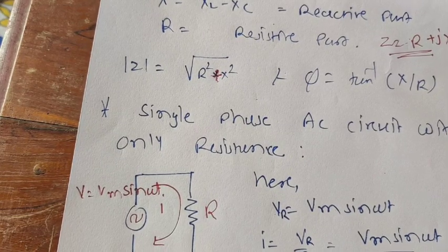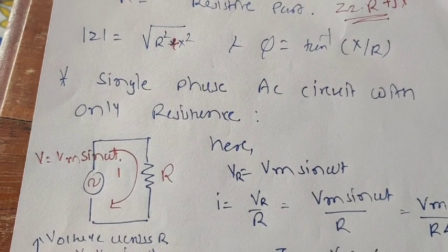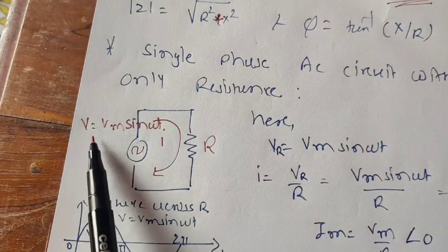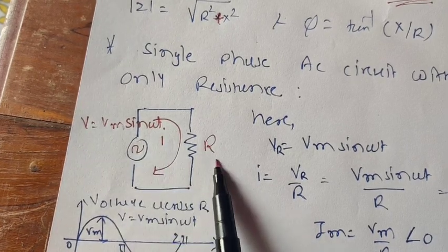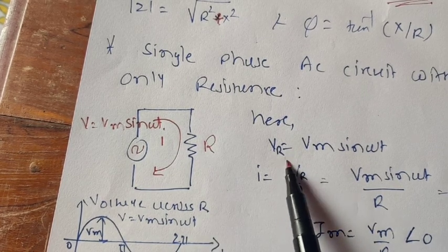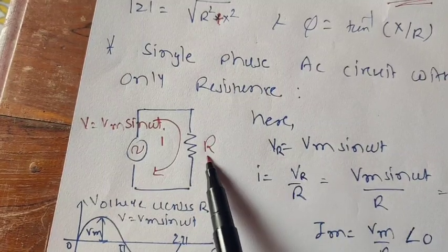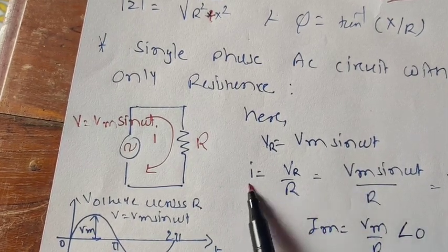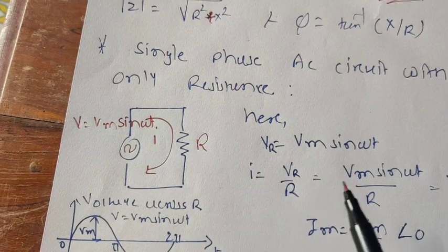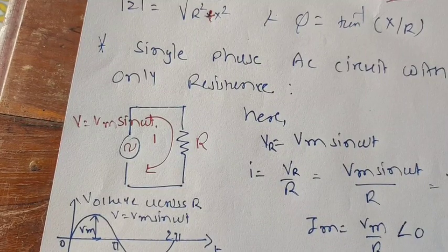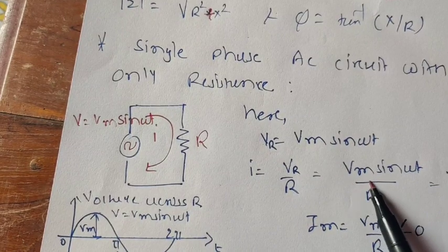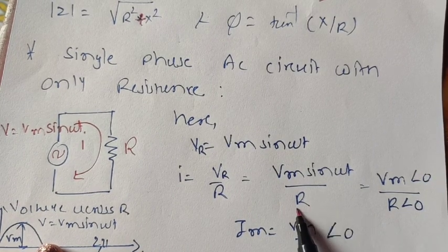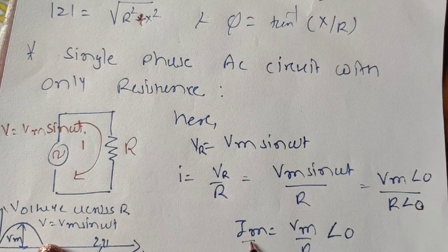Now we start with the single-phase AC circuit using only resistance. The input voltage is V = Vm sin(ωt). For a purely resistive circuit, the voltage across R is Vr = Vm sin(ωt). According to Ohm's law, the current I = Vr/R = Vm sin(ωt)/R. The peak value of current Im = Vm/R, and the phase angle is zero, meaning voltage and current are in phase with each other.